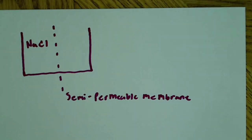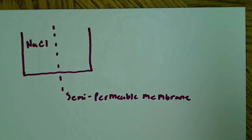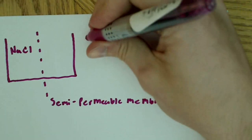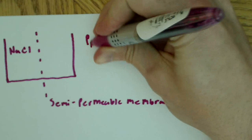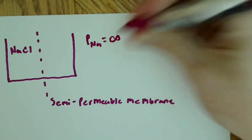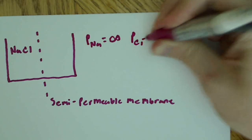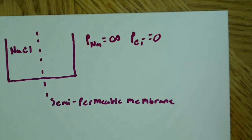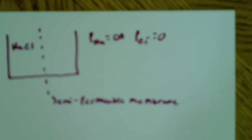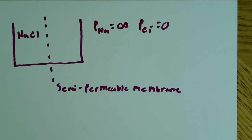And what I want to do is I want to know what's going to happen if the permeability to Na is equal to infinity. Meanwhile, the permeability to Cl minus is equal to zero. So I want to know what's going to happen in a case where the permeability to Na is equal to infinity and the permeability to Cl is equal to zero.